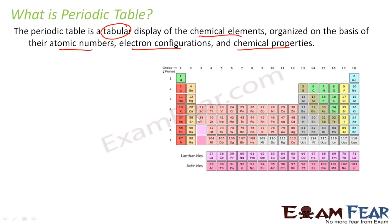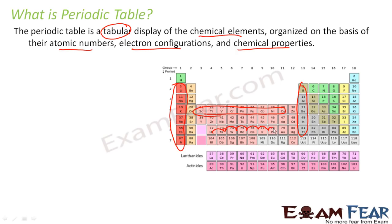You arrange these elements in a tabular fashion such that all these elements have similar chemical properties and similar electronic configurations, and the atomic number keeps increasing as you go from one position to the next. So there is a specific way to arrange the elements.